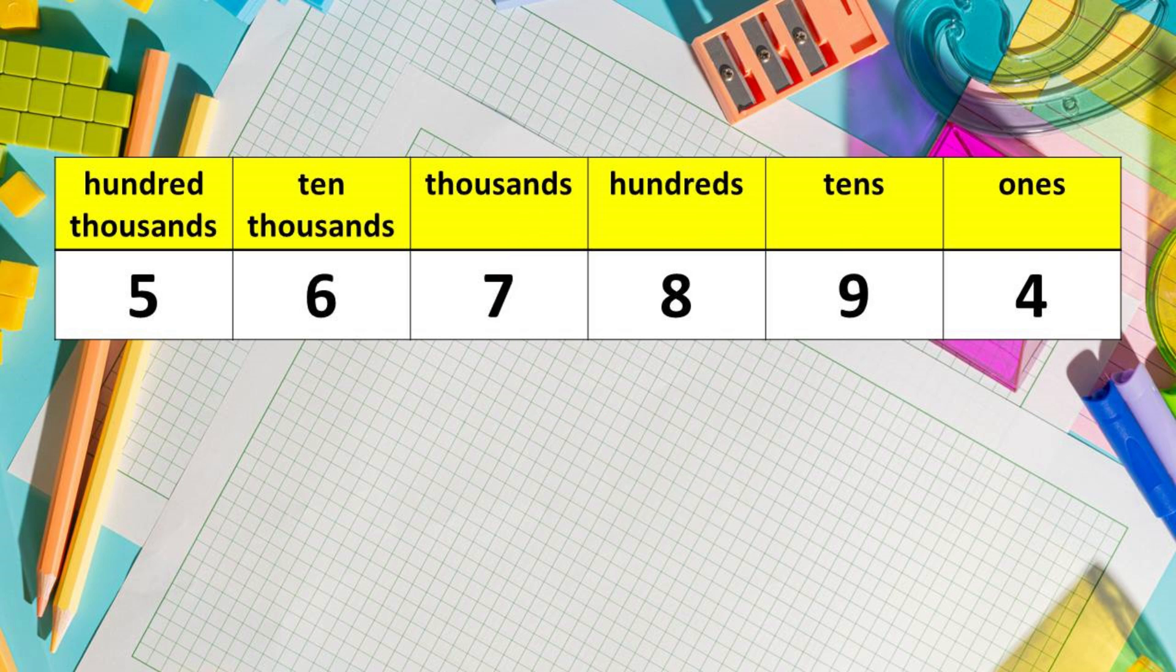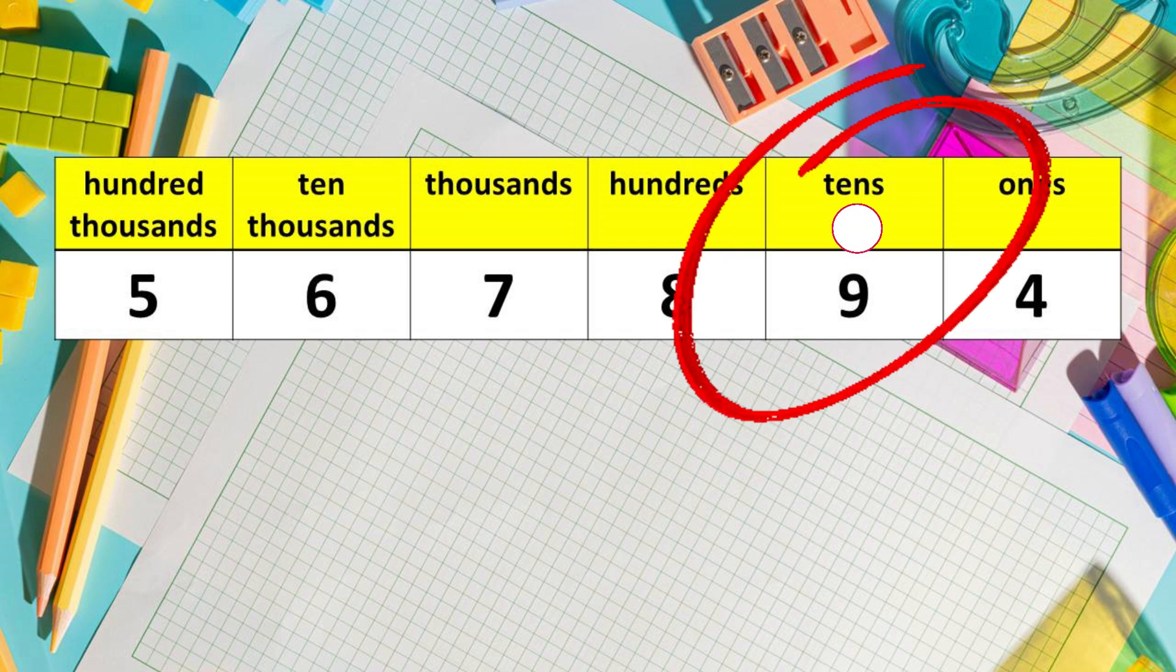How about the value of 9? It is in the tens place. So we are going to multiply 10 times 9. The answer is 90. So the value of 9 is 90.